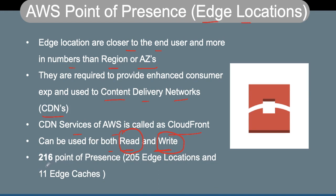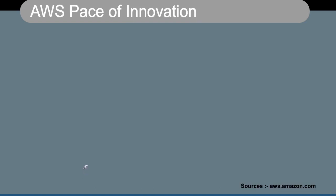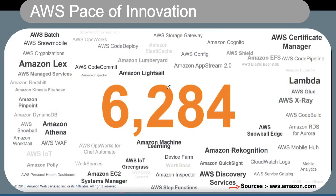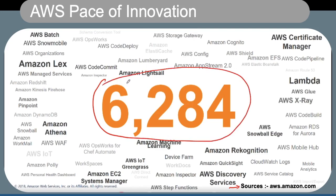AWS has 216 points of presence, which includes 205 edge locations and 11 edge caches. They have more than 6,000 different services and functions available, and they are growing these numbers very quickly. Every time you log into your AWS account, you will see one or more new services available.